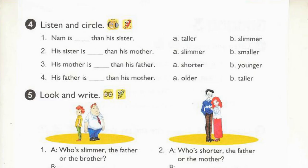Page 27, Activity 4. Listen and circle. Hi. My name's Nam. This is my family: my father, my mother, my sister and me. 1. I'm not very tall, but I'm taller than my sister. 2. My sister's slim. She's slimmer than my mother. 3. My mother's 33 years old. She's younger than my father. 4. My father's tall. He's taller than my mother.